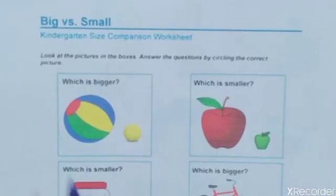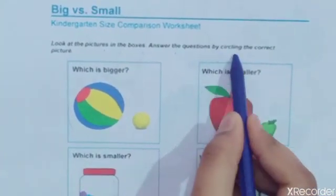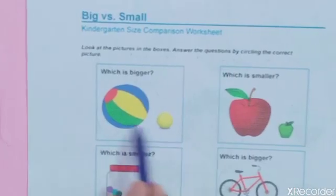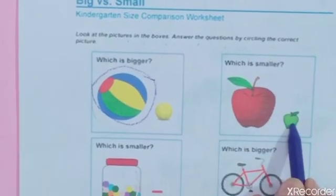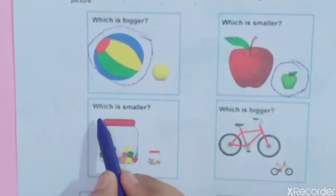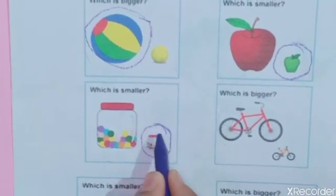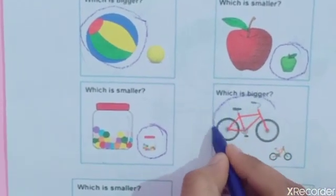Now we will do practice from the worksheet. Children, look at the pictures in the boxes. Answer the questions by circling the correct picture. See first picture — which is bigger? Which one is smaller? This one is smaller. Next, which is bigger? See the picture? This one is bigger.